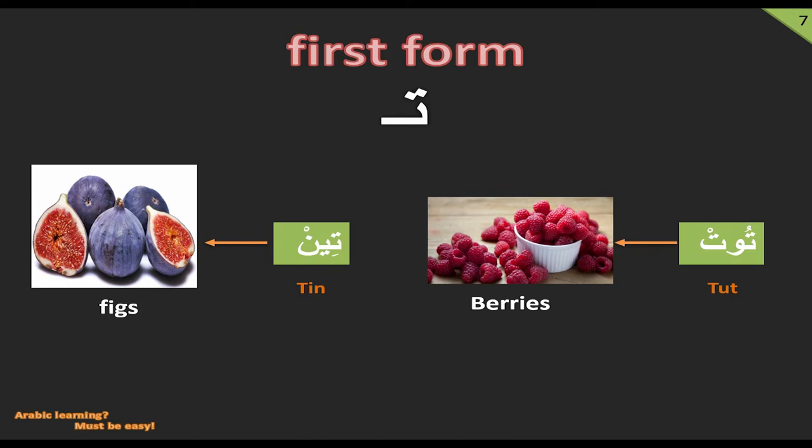Here we have two examples of the first form of the letter Ta at the beginning of the word. As simple examples, we have the noun 'toot' — dhamma on Ta and sukun at the end — which means berries. And the second example, the noun 'teen', with kasra under Ta, which means figs.